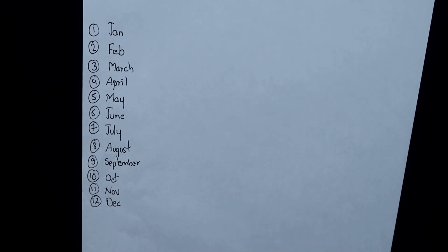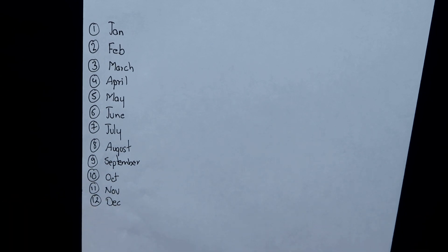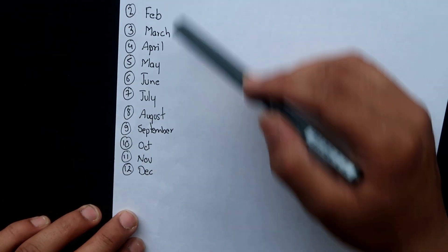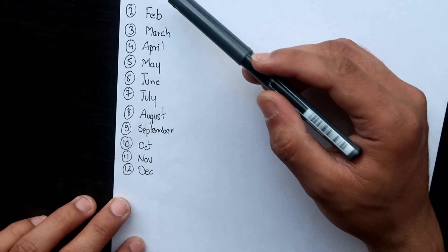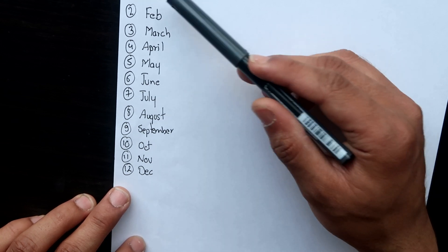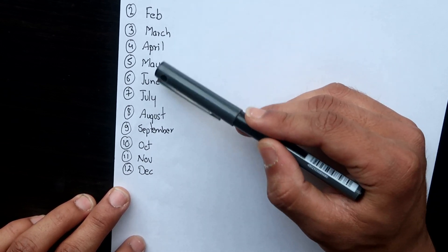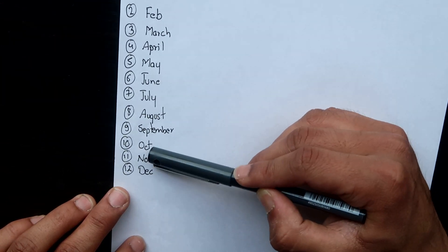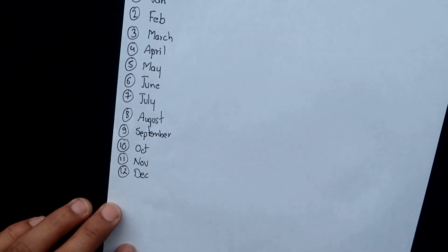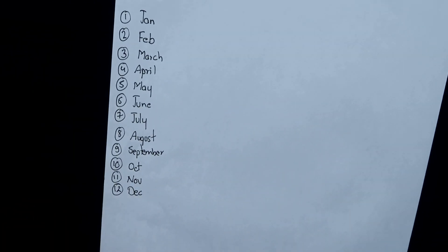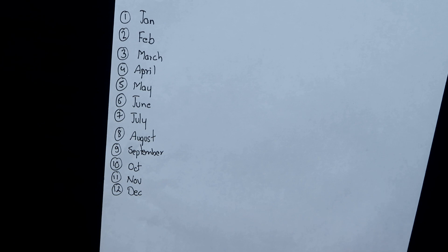Hello everybody. Today in this video I'm going to teach you how to calculate the estimated date of delivery, and I'm going to go through all sorts of examples. You can see I've written all 12 months in a year: January, February, March, April, May, June, July, August, September, October, November, December. I'm going to teach you the best way to calculate the estimated date of delivery and give you several examples.